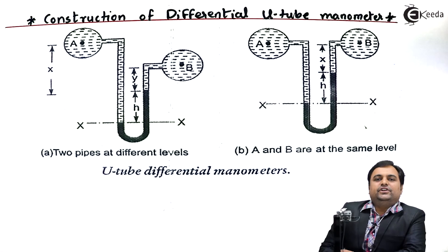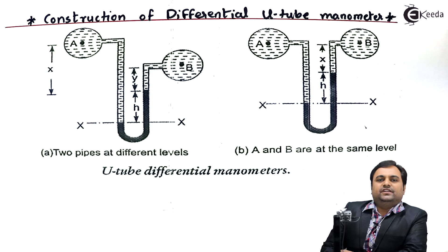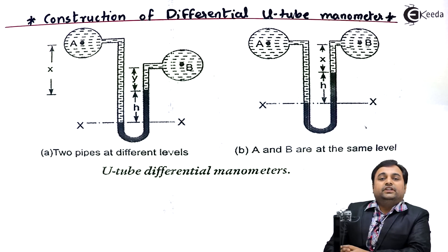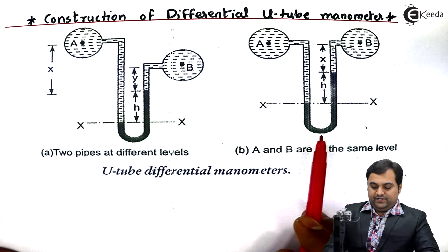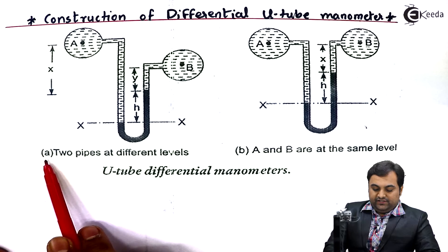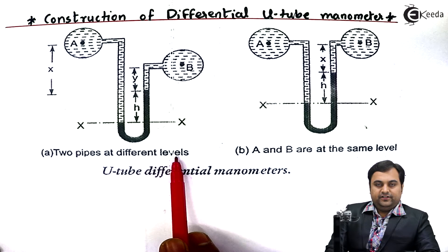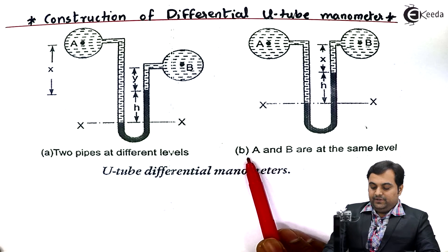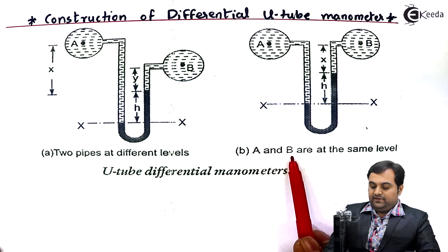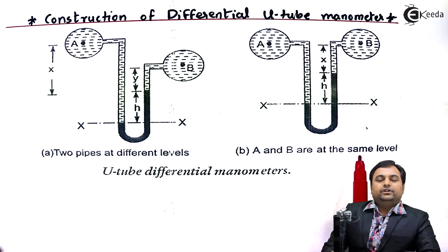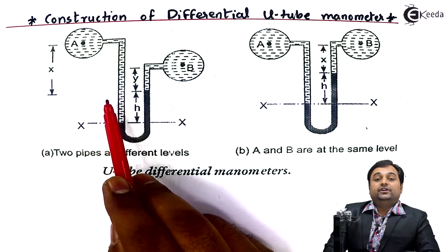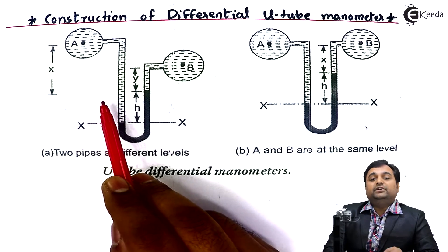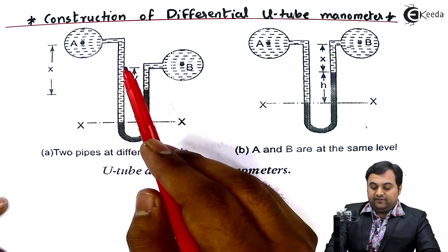In this video we will see the construction and description of a differential U-tube manometer. We have a diagram here with figure A, in which the two pipes are at different levels, and figure B, where pipes A and B are at the same level. A differential manometer is used in a pipeline to measure the difference of pressure between fluids in two pipelines.